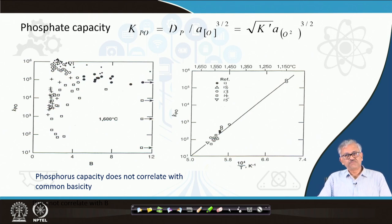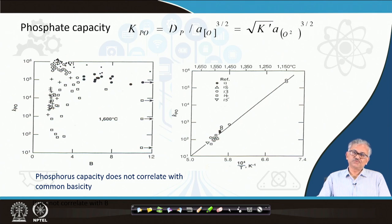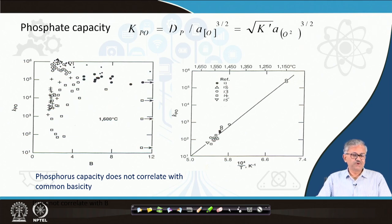The lack of correlation between KPO and common basicity means that not all basic oxides are equally efficient at retaining phosphorus in the slag. Only certain basic oxides are responsible for retaining phosphorus — not all of them. If all basic oxides were equally responsible, a clear correlation would be observed.